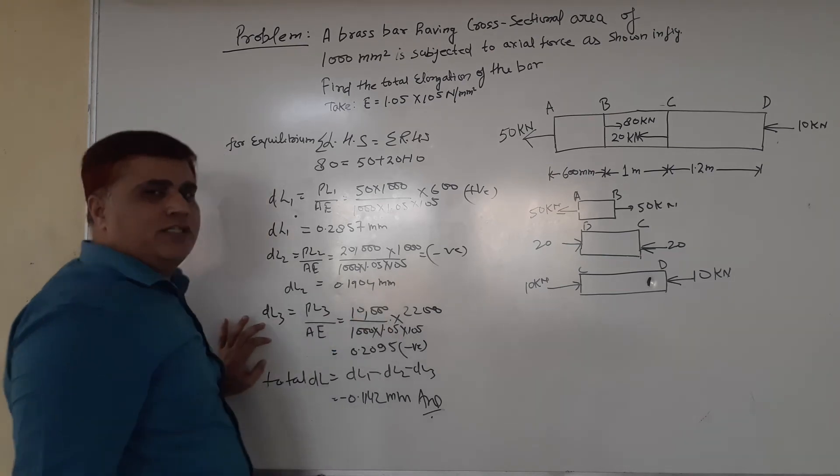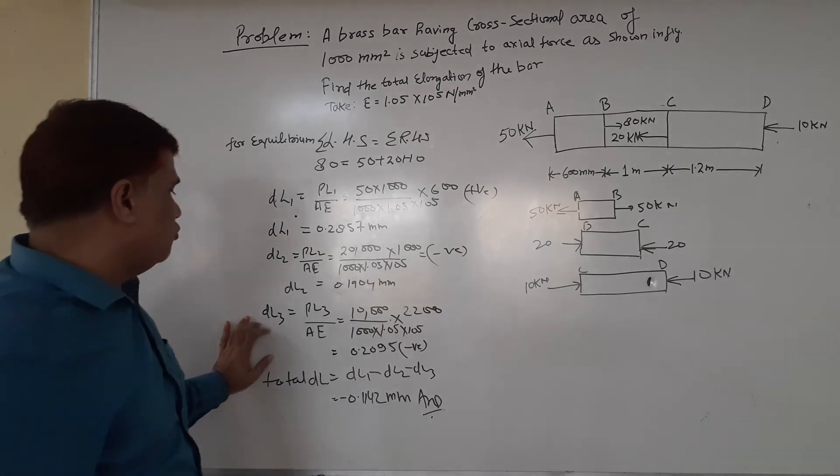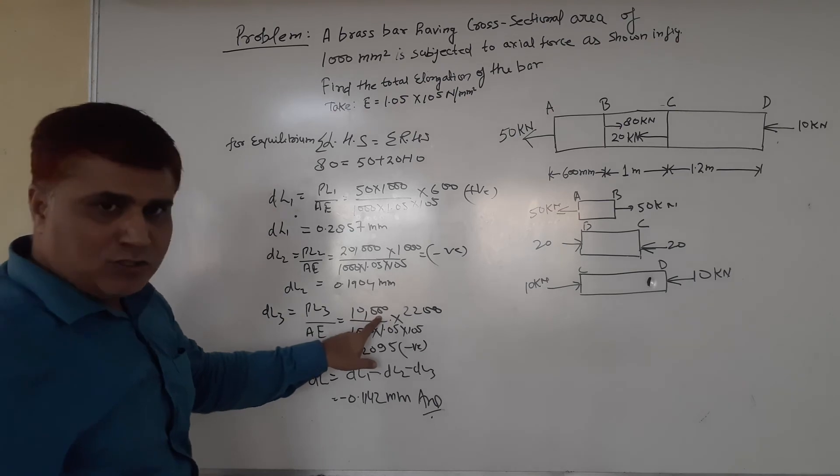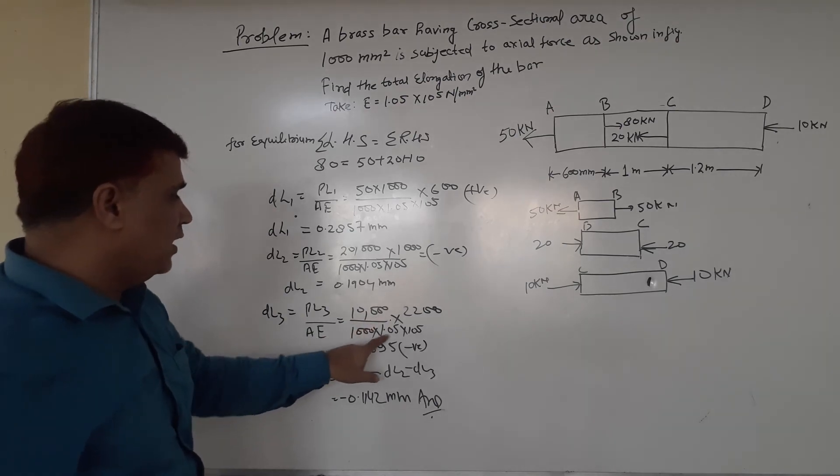Same way, we calculate ΔL₃. Putting the value: P = 10 kN = 10,000 N, divided by area and Young's modulus of elasticity.